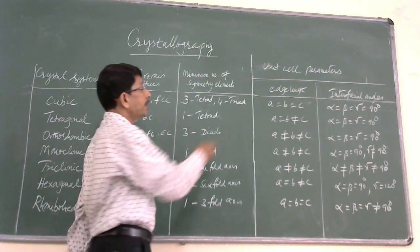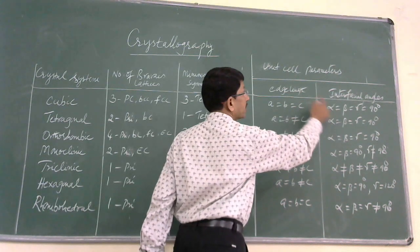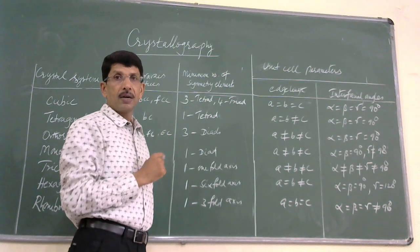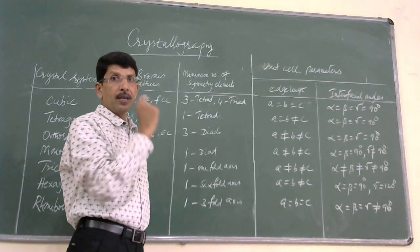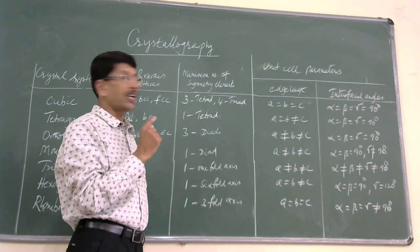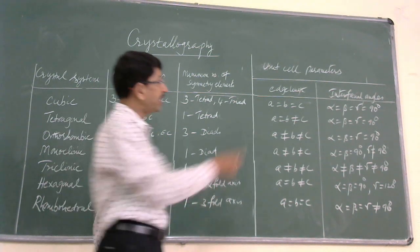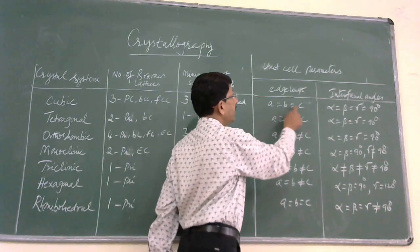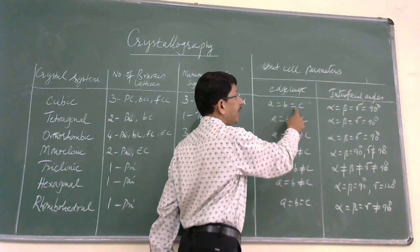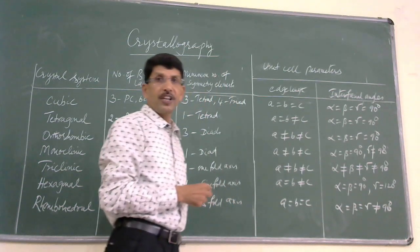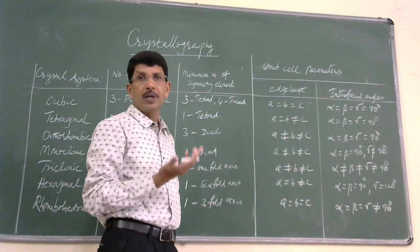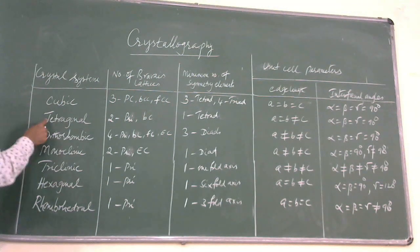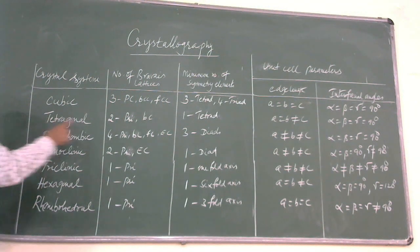In the case of the cubic system, all the axes are equal to one another in length and all the interfacial angles are equal to 90 degrees. Those are the unique parameters for the cubic crystal system.